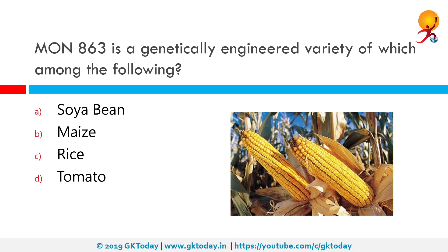MON 863 is a genetically engineered variety of which among the following? The correct answer is maize. MON 863 is a variety of genetically engineered maize produced by Monsanto, which is an American agrochemical and agricultural biotechnology corporation.